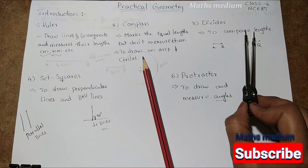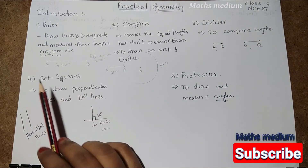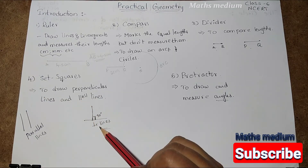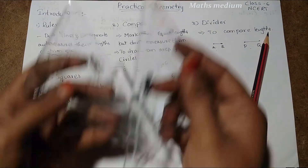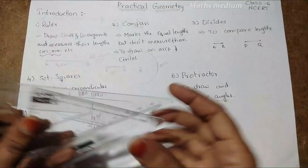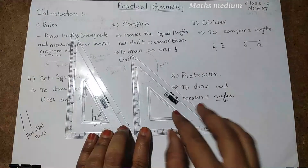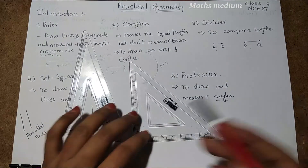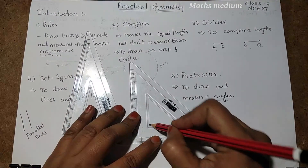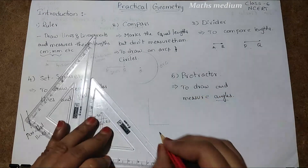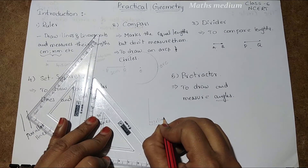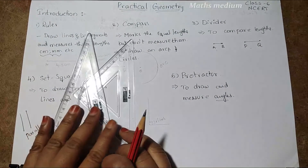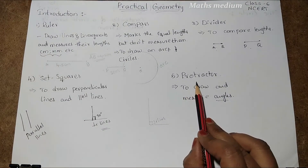Next is set squares — to draw perpendicular lines and parallel lines. We already discussed those. Here are the two set squares. See, if you make one line here and another line here, these two are called parallel lines. And if you put a point and draw a line like this, these two are called perpendicular lines. So to draw perpendicular lines and parallel lines, set squares are mostly used.